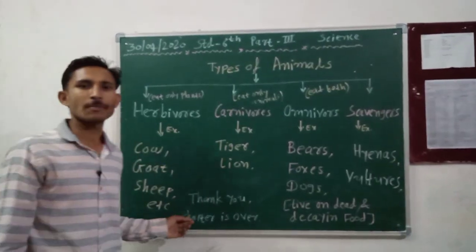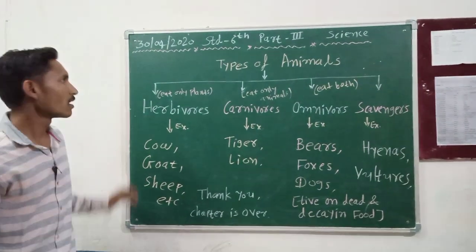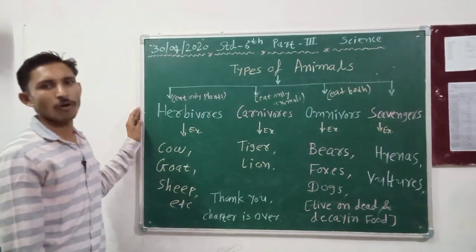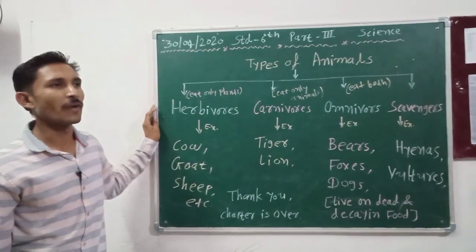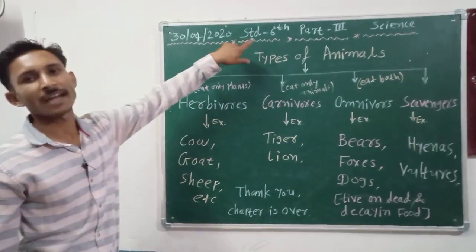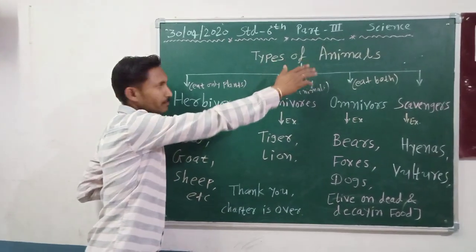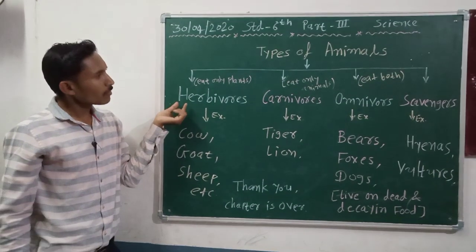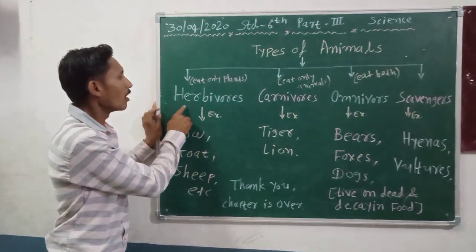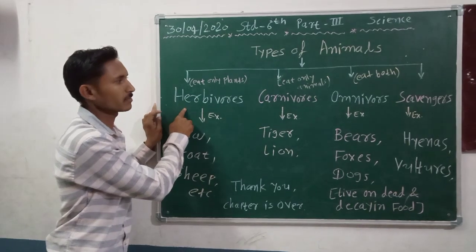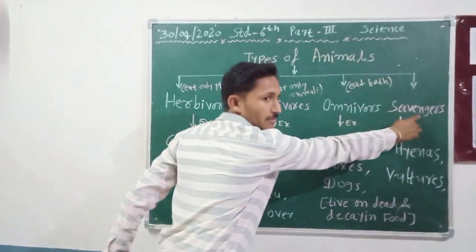I am Nirav sir from Hillshire English Medium. This is Part 3 of Chapter 1 — 'Food: Where Does It Come From?' — of Standard 6 Science. First, we will see four types of animals: herbivores, carnivores, omnivores, and scavengers.